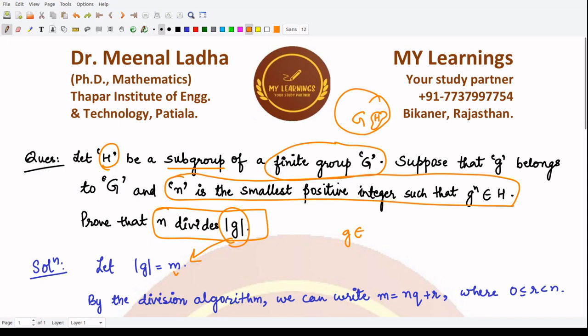We can write m in this form: m = nq + r, where q is the quotient and r is the remainder, and we have a condition that the remainder is either equal to 0 or it lies between 0 and n. Now we want to prove that n divides m, so we have to prove that r should be 0.